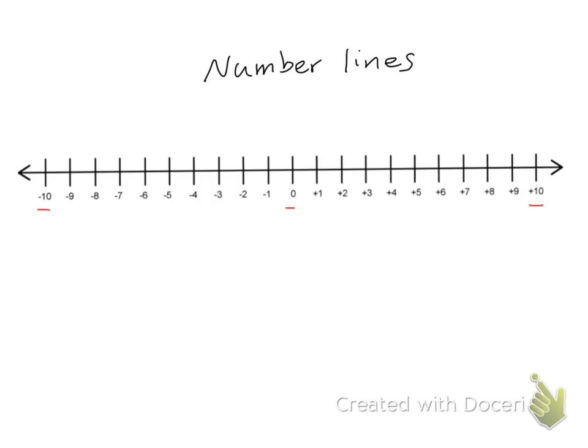The space or distance between each number is what we call a unit segment, because it's just one segment of the whole line. The numbers to the left of zero we call negative numbers, and the numbers to the right of zero are called positive numbers.